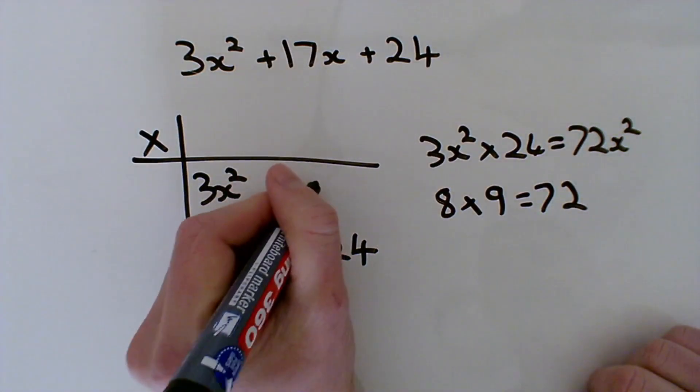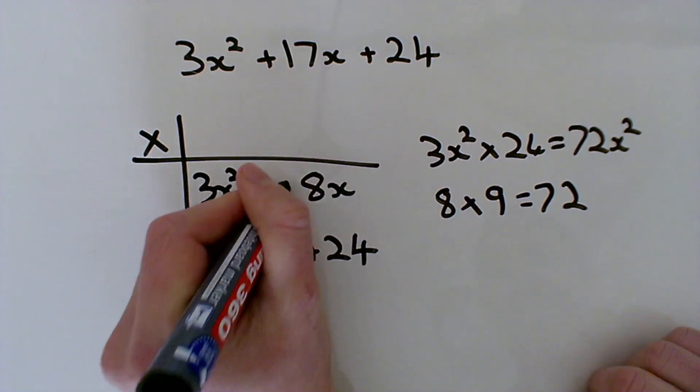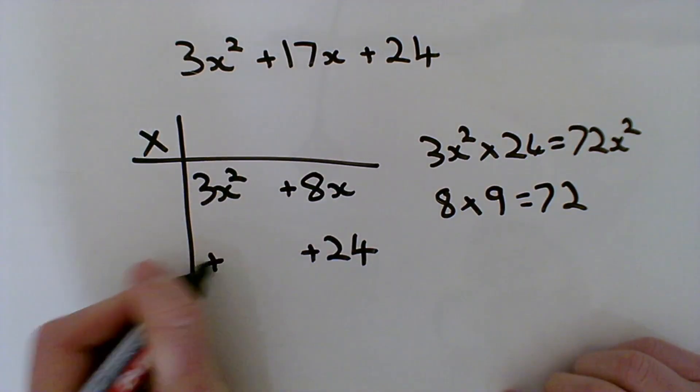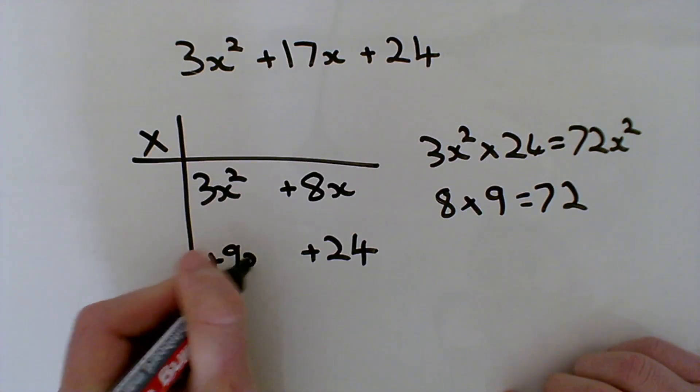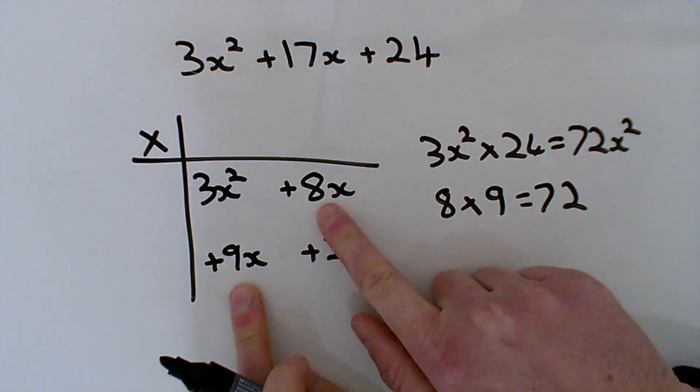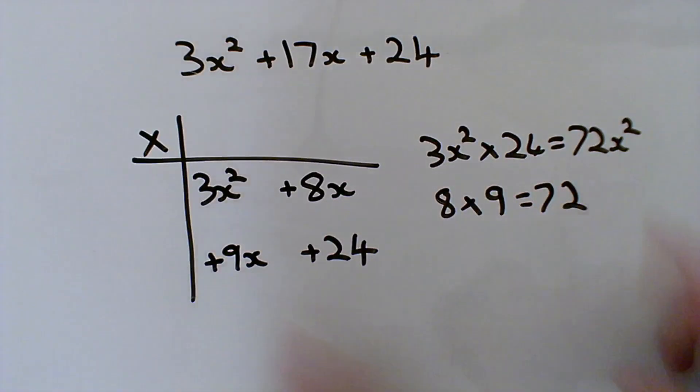Now, it's not just 8 and 9, obviously it's 8x or positive 8x and positive 9x. And you notice they now multiply together to give us 72x squared.